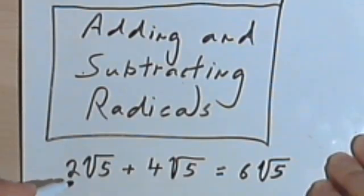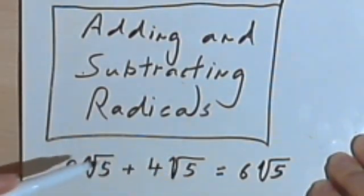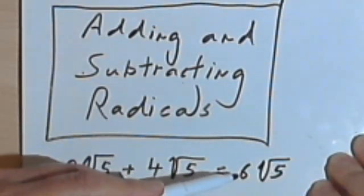times the square root of 5. And if you think about it, it kind of makes sense. We have two of these radicals, and then we have four of these radicals, so if we have two and four of them we end up with 6 altogether.